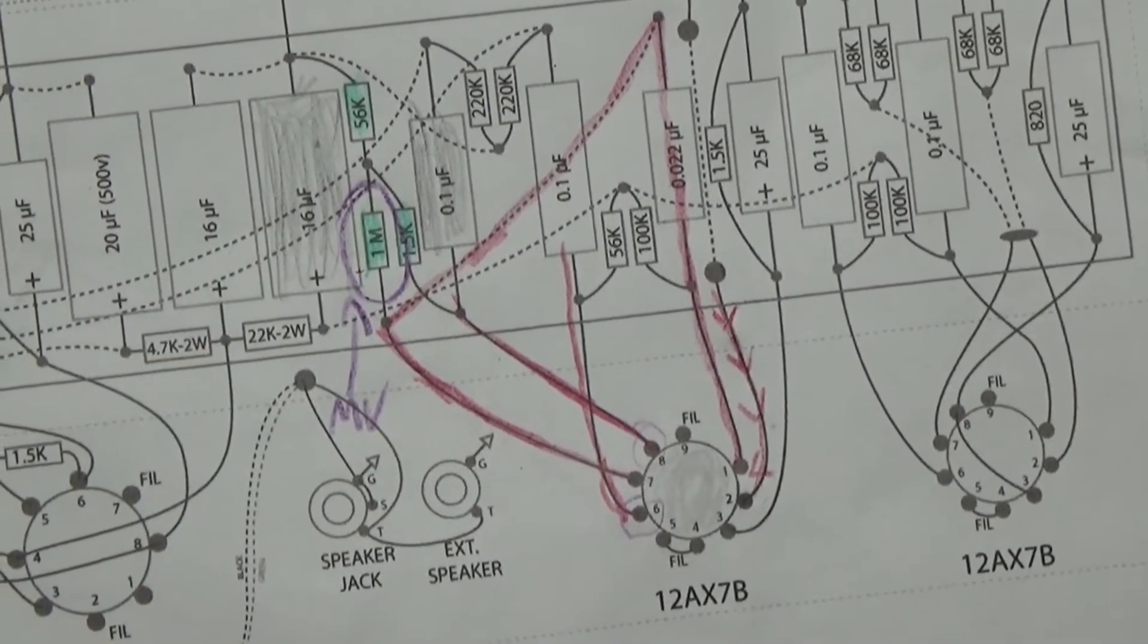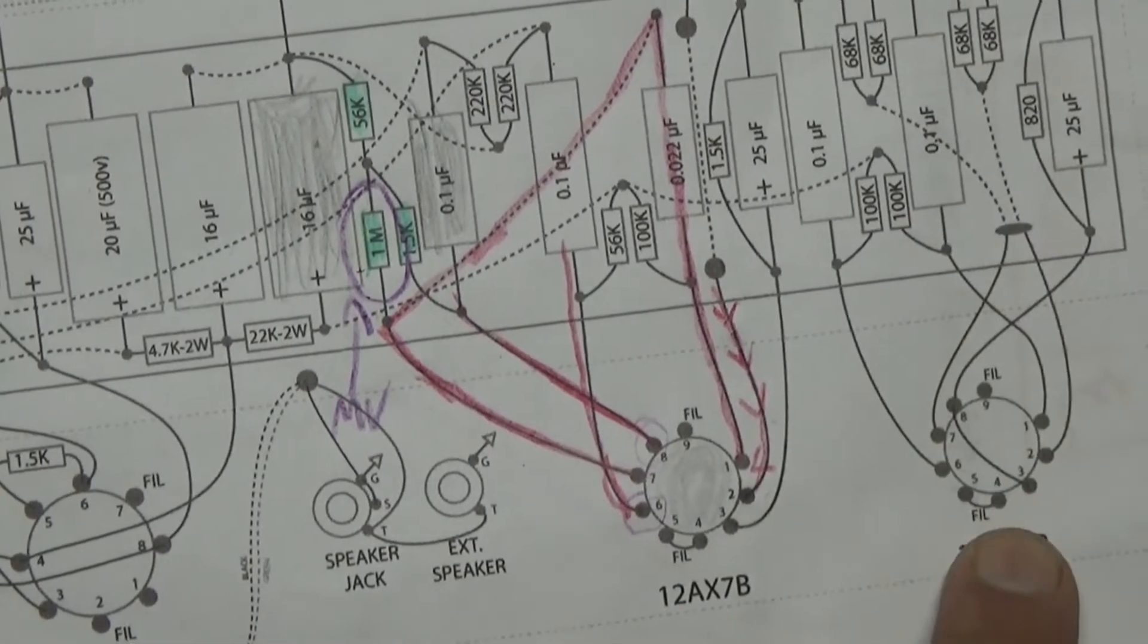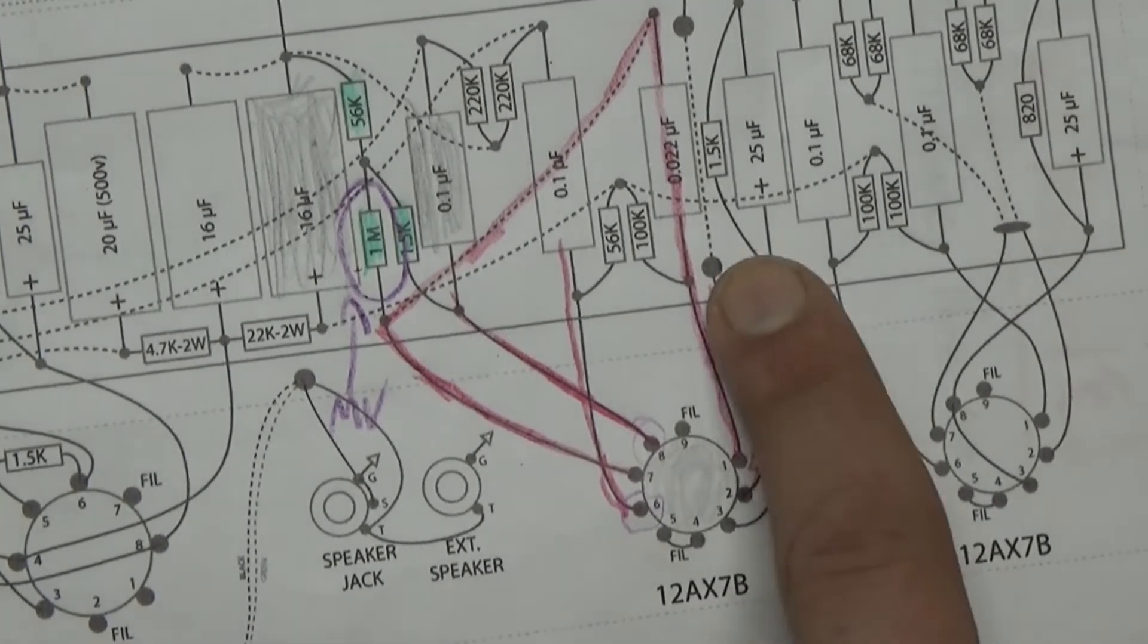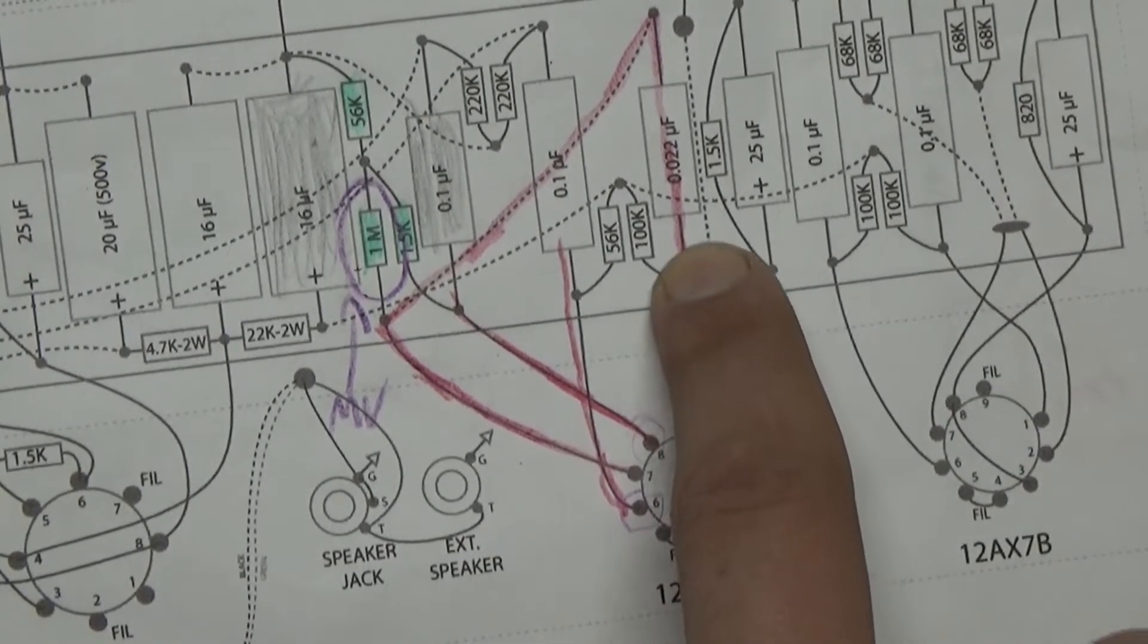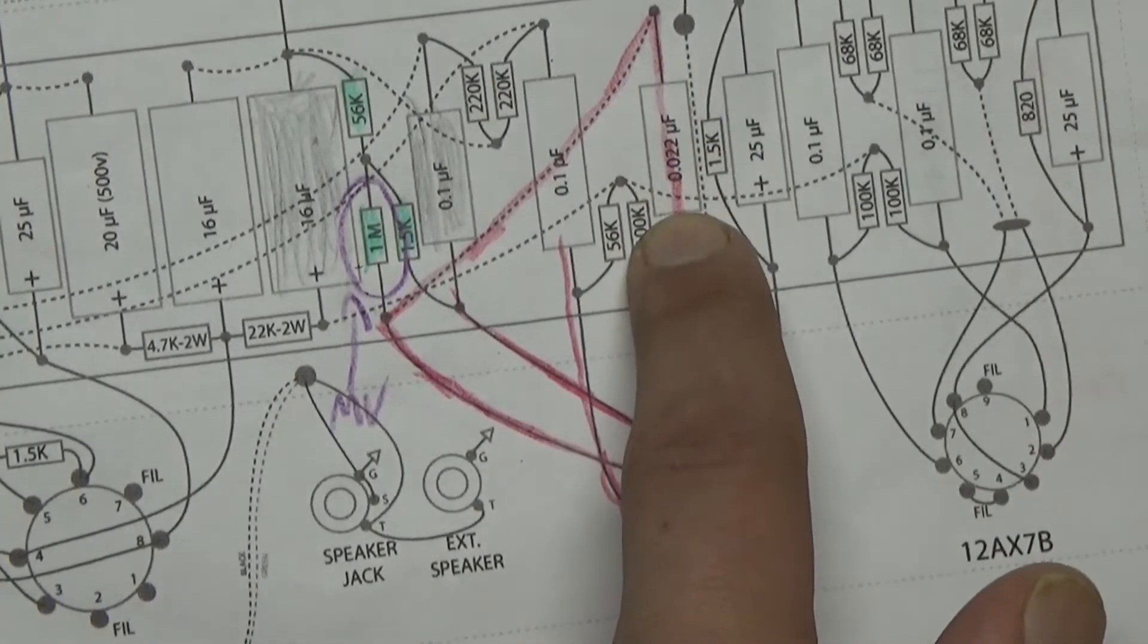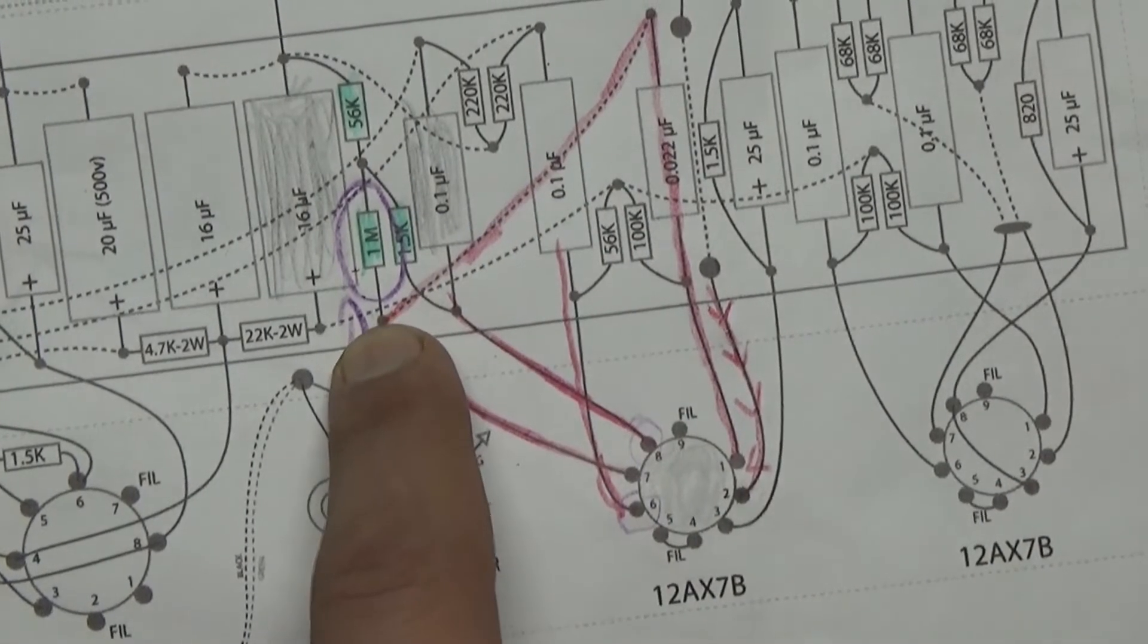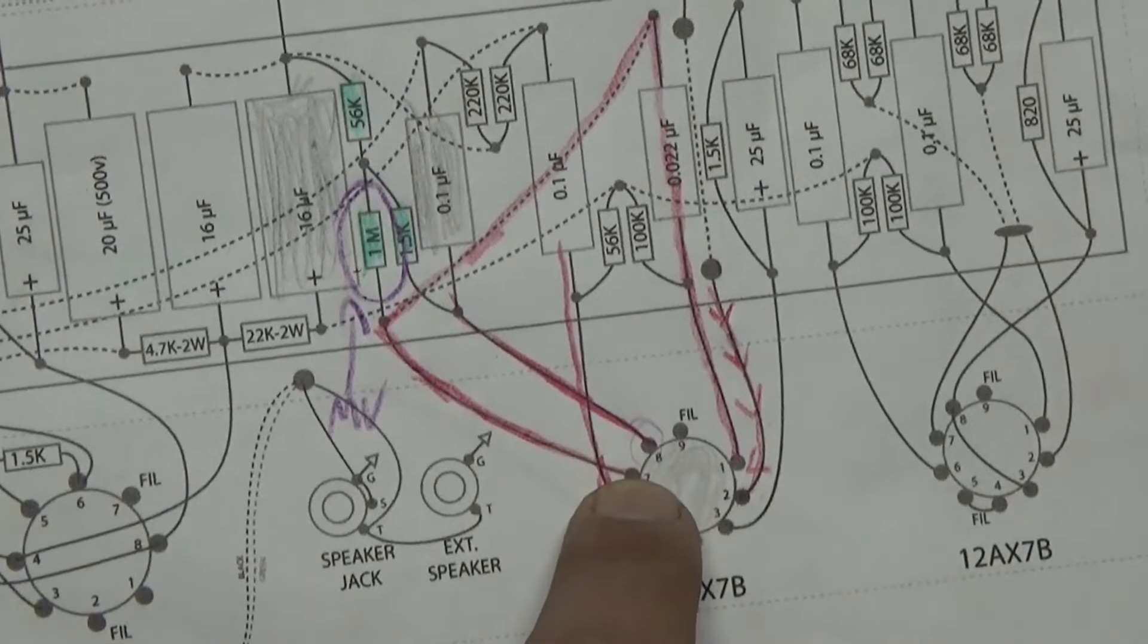So how does this work? All right, so our guitar signal has already passed through our first preamp tube and it's coming down into our second preamp tube. It enters the grid via pin 2 and it comes out of the plate, goes through the coupling cap to reduce or to eliminate the DC, and the AC continues to pass to this one meg grid leak resistor.